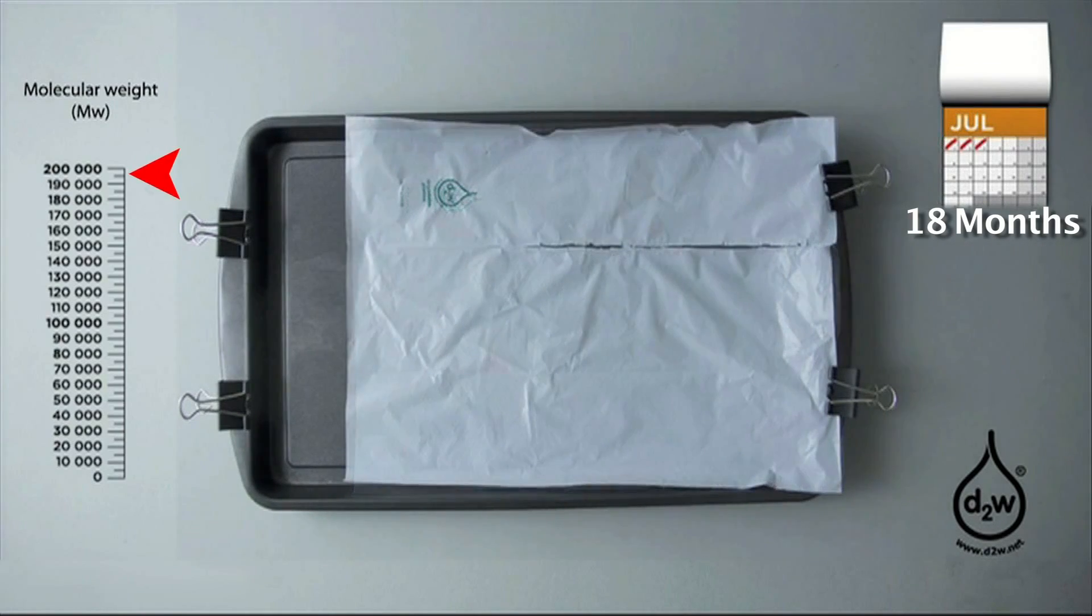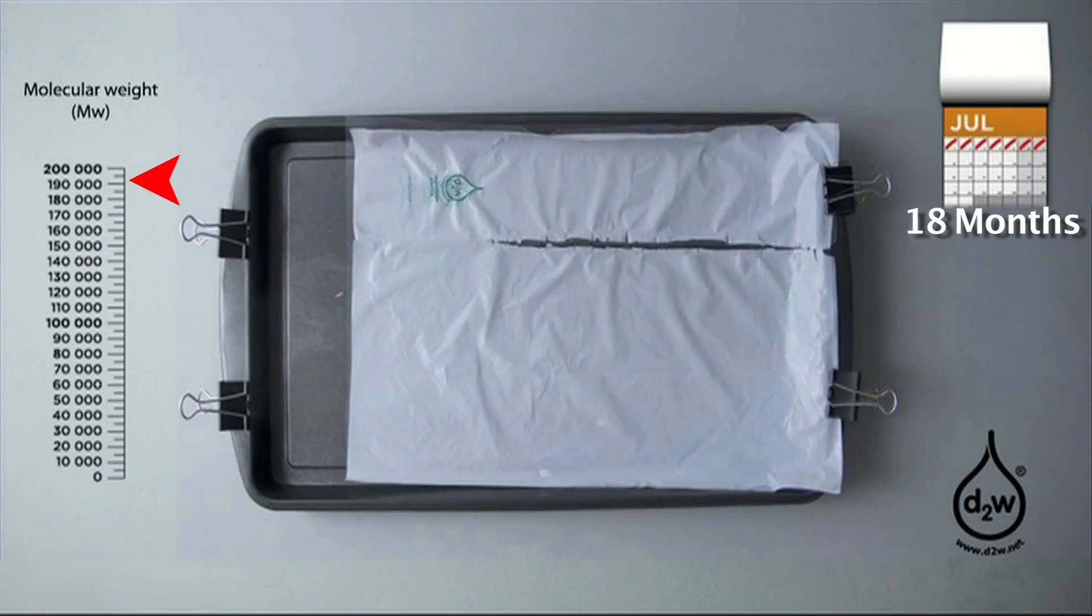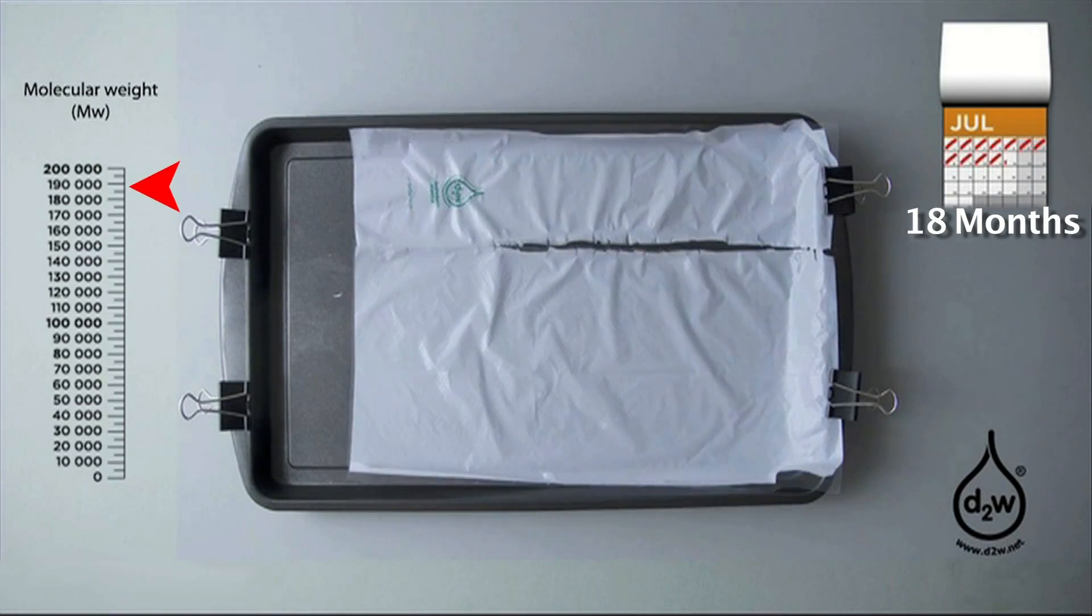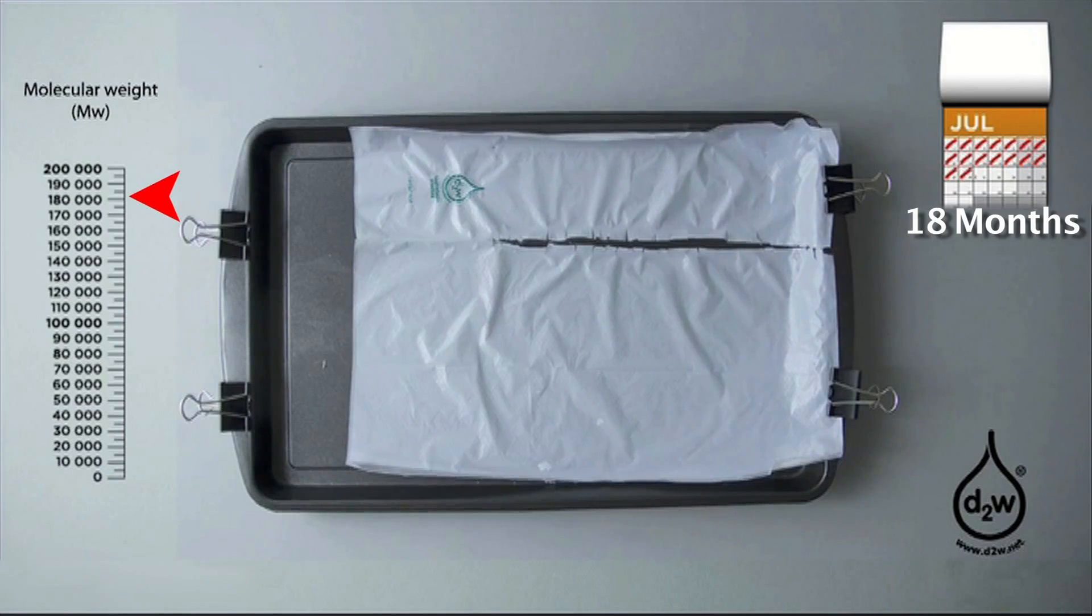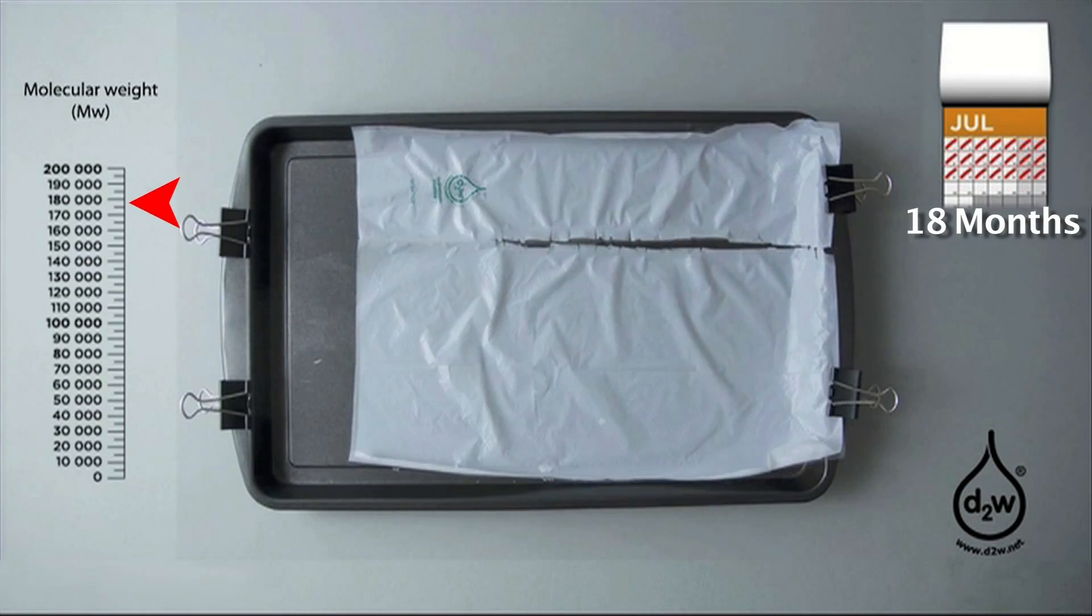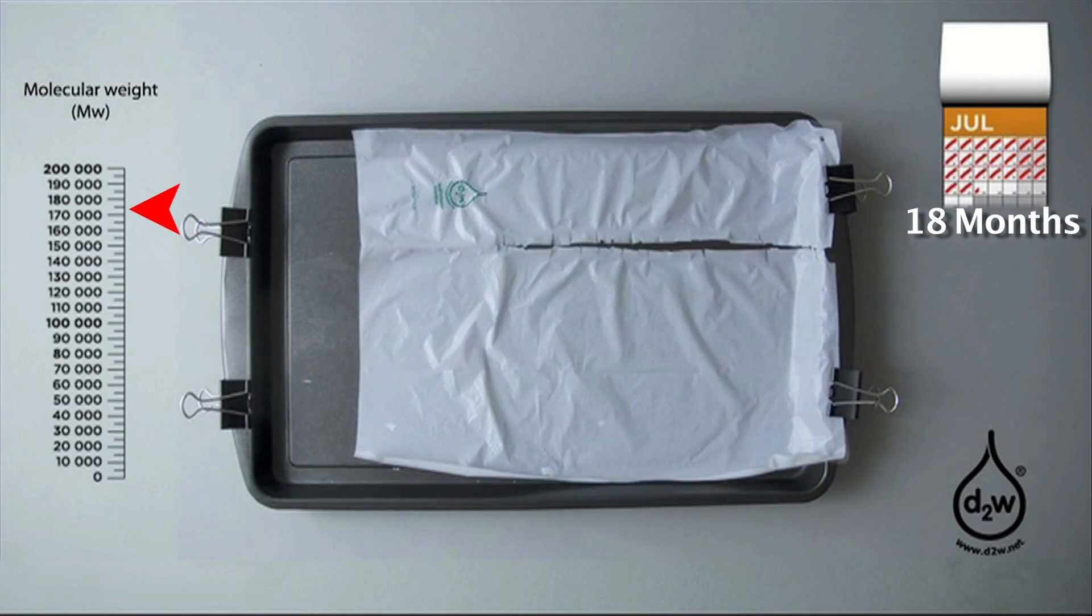The plastic material which you see here was designed to start degrading after 18 months. But by adjusting the formulation of the D2W we can program longer or shorter periods of fitness for purpose into the plastic product.